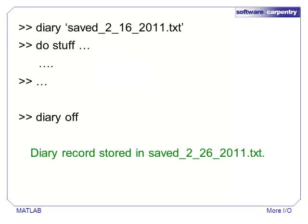To turn on the diary, type diary and a file name. If you don't specify a file name, the output is stored in a file called diary. You can turn the diary on and off by typing diary on and diary off.